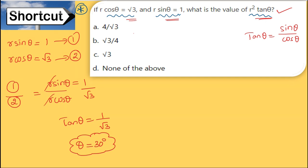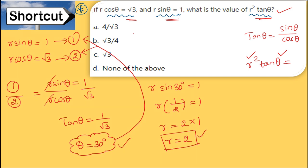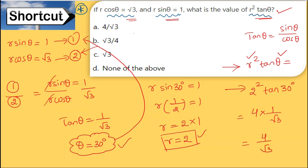Now find r. From r cosθ = √3: r cos30° = √3, so r × (√3/2) = √3, giving r = 2. The question asks for r² tanθ = 2² × (1/√3) = 4 × (1/√3) = 4/√3. Option A is the correct answer.